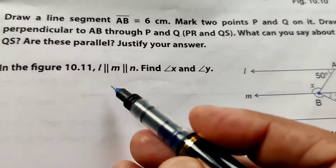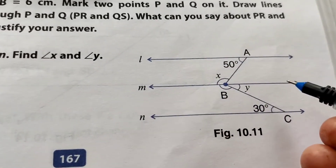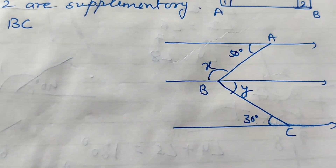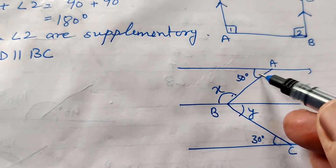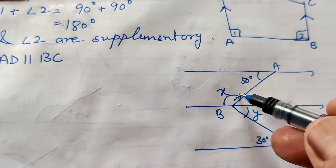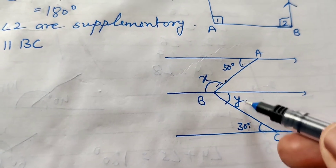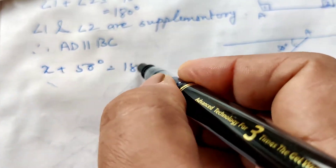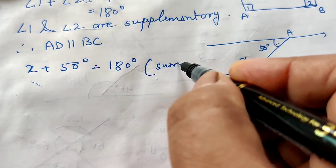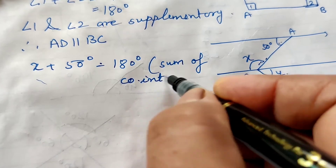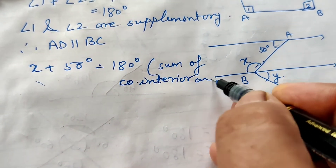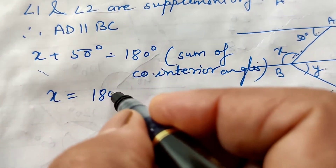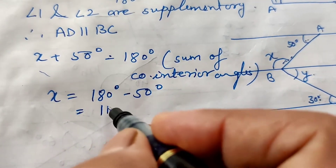Question 4: In the figure, L is parallel to M and N. Find angle X and Y. X and 50 degrees are co-interior angles, so their sum is 180 degrees. X plus 50 equals 180, therefore X equals 180 minus 50, which equals 130 degrees. Y and 30 degrees are alternate angles, so Y equals 30 degrees directly.